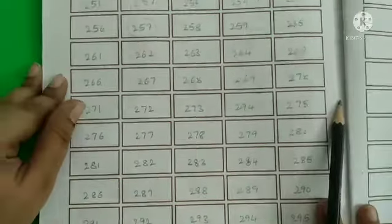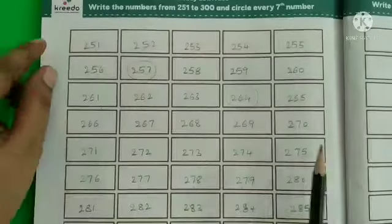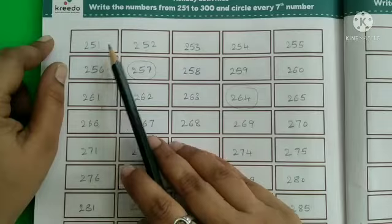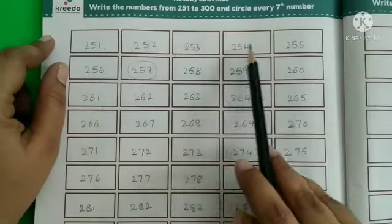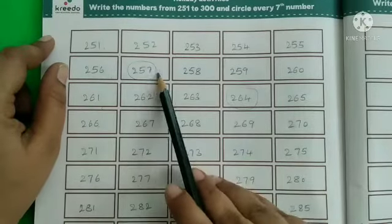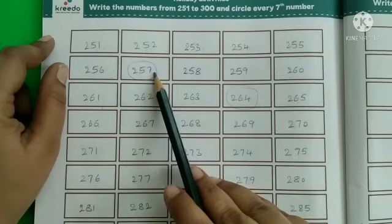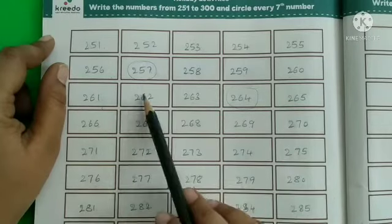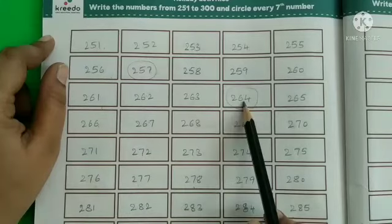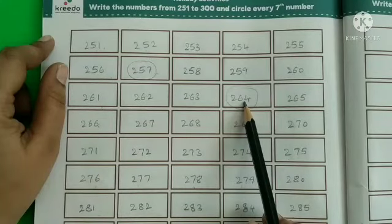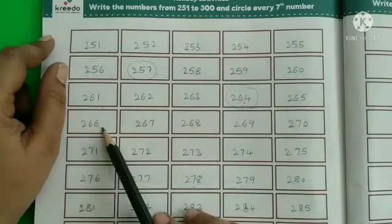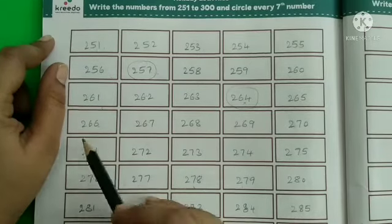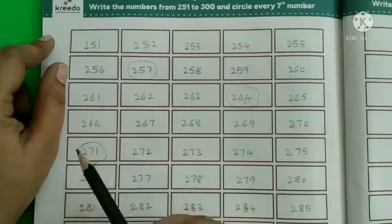Here circle every 7th number. Start counting from 251. First, 2nd, 3rd, 4th, 5th, 6th, 7th. Circle 257. First, 2nd, 3rd, 4th, 5th, 6th, 7th. Circle 271.